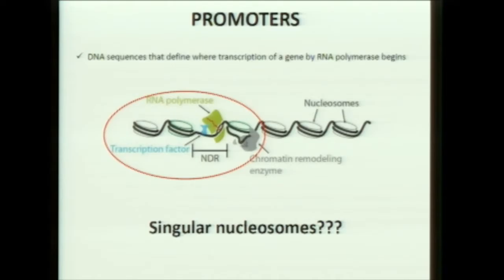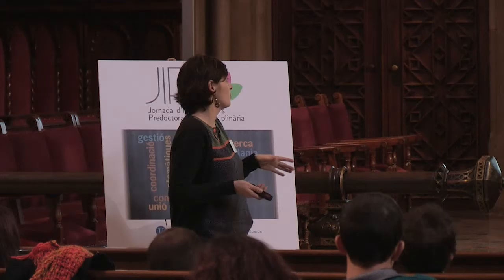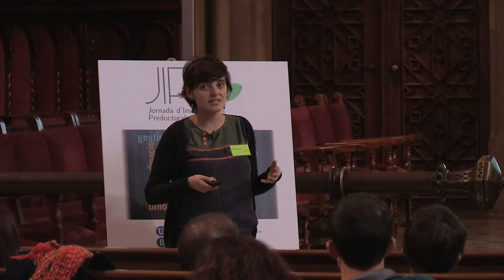This breaks the rule, and now it would be very important to know why there is a different wrap of the DNA around the nucleosome. We think that there should be more different nucleosomes in the genome, so now we are studying the promoter regions.